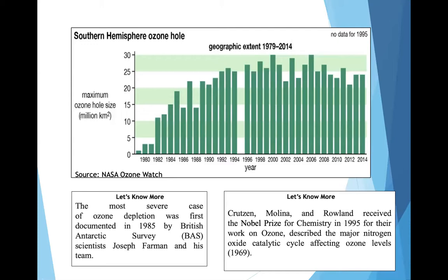Interestingly, the 1969 research by Crutzen and his team won the Nobel Prize for Chemistry in 1995 for reporting the connection of ozone and its reaction with nitrogen oxide.